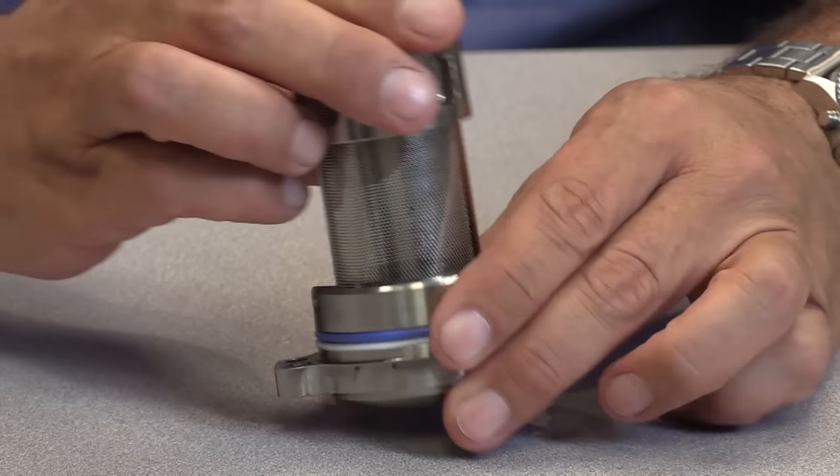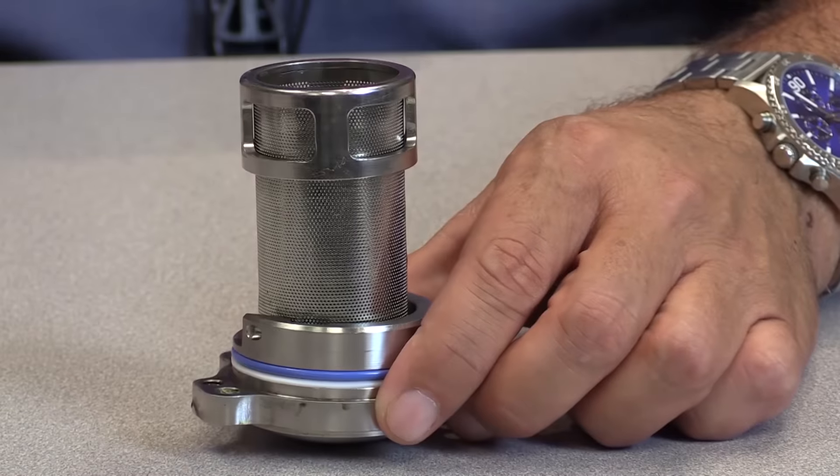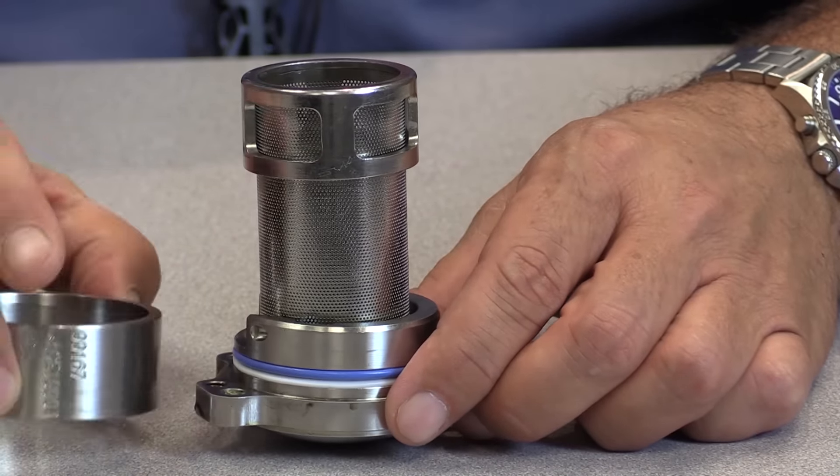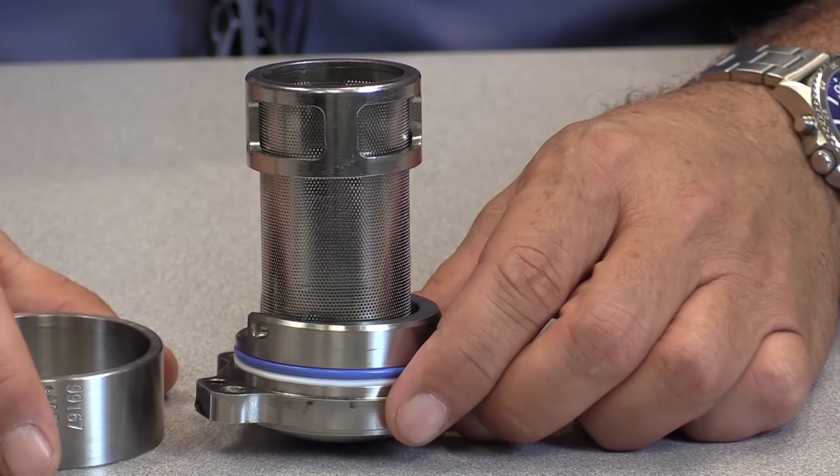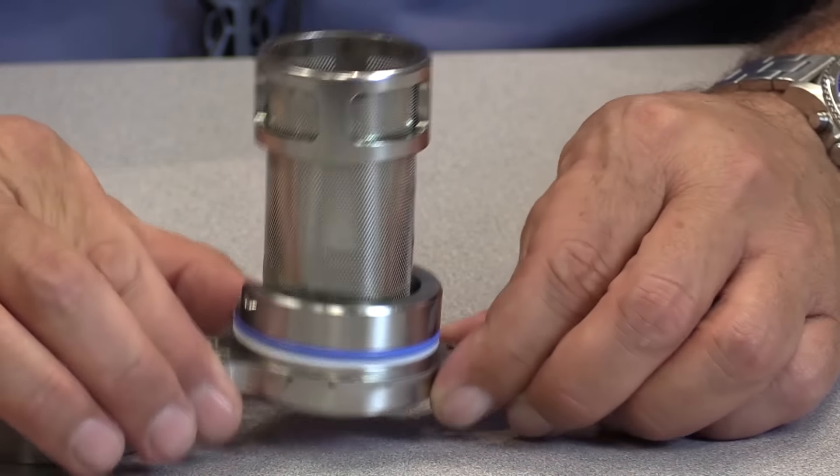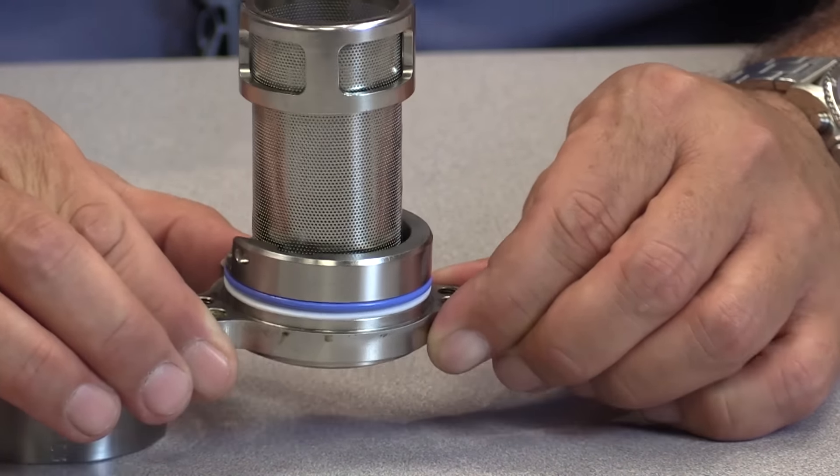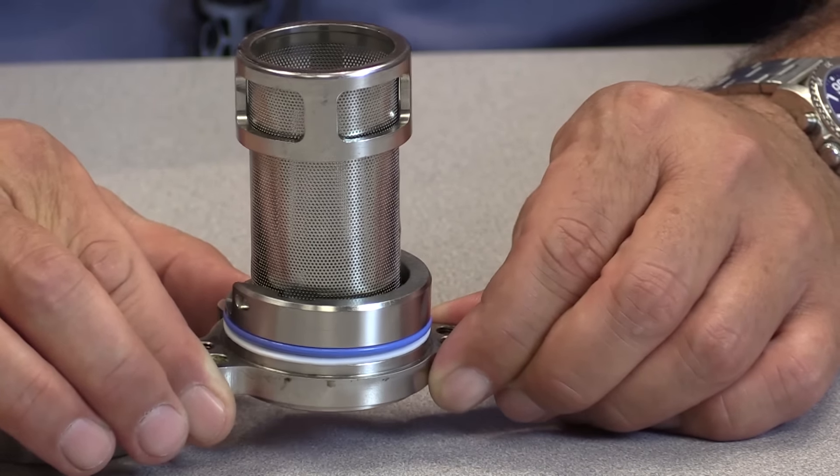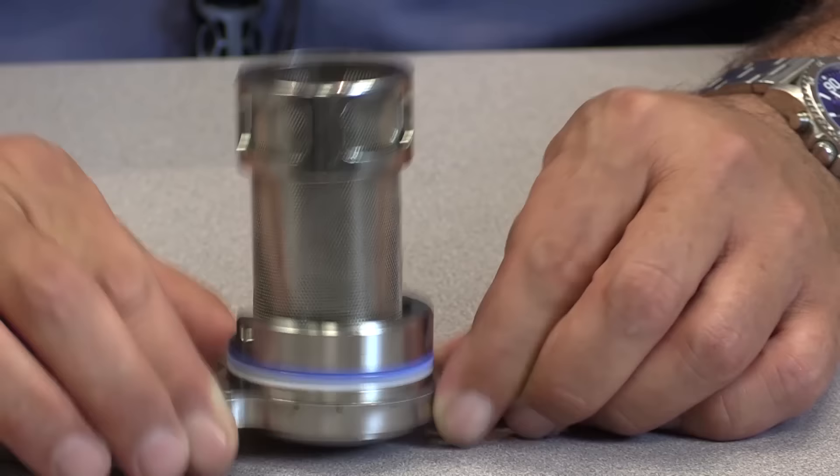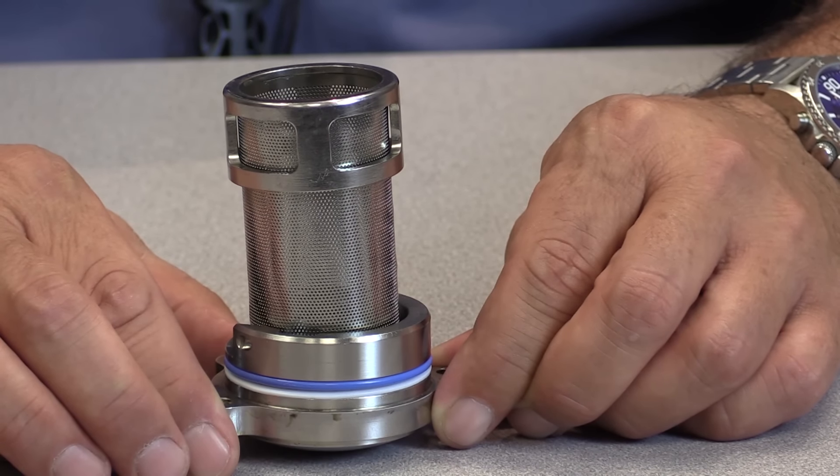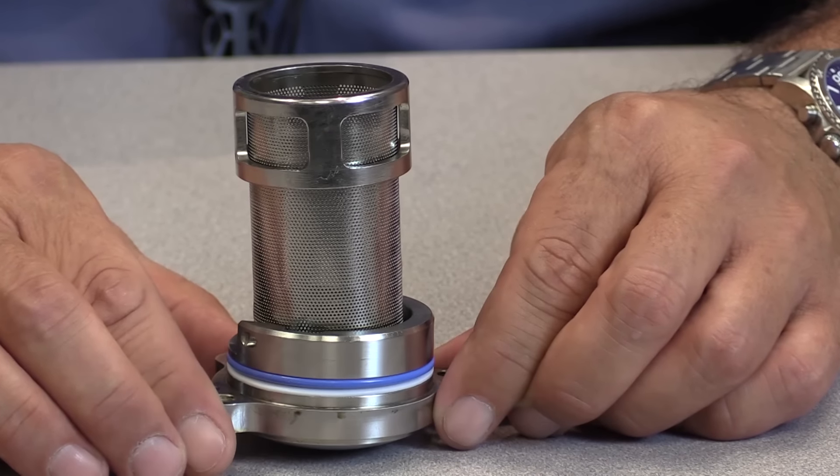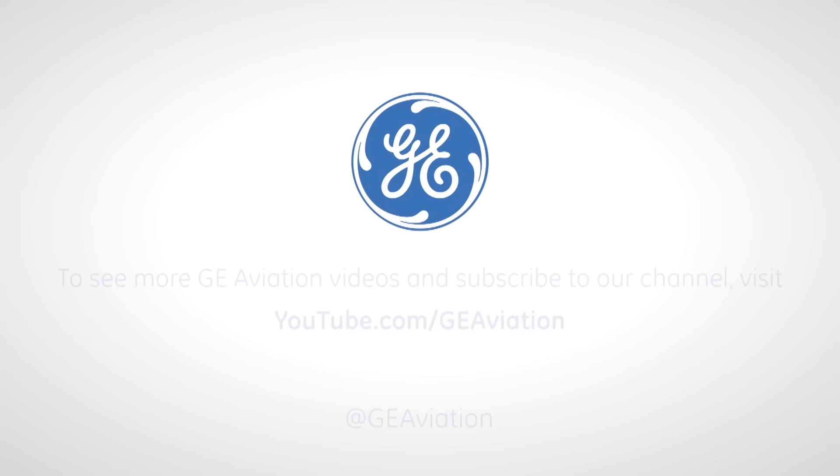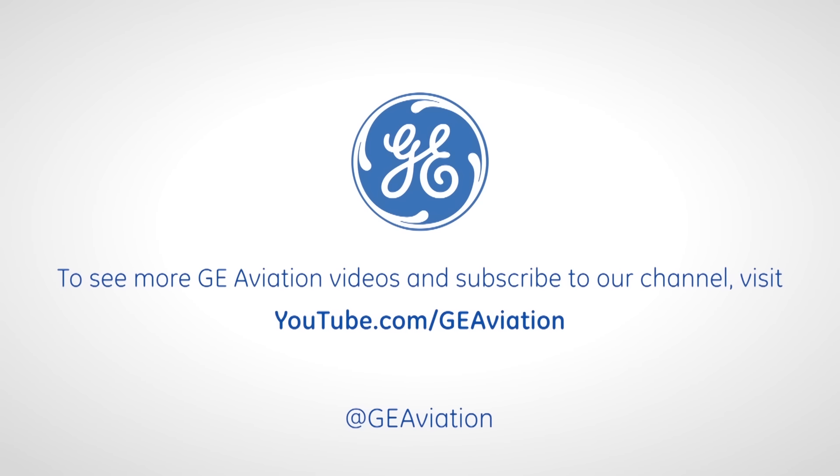Now remember, if you don't have the tooling that I detailed before, you're not going to have the sizing die to verify that the packings are not protruding too much from the groove. So, just remember as the strainers installed in the fuel pump, go very slow, make sure the packings are not binding on the bore inside the fuel pump and you'll be okay. That's it for CF-680E1 fuel strainer packing installation. Hope you enjoy the maintenance minute and I'll see you next time.